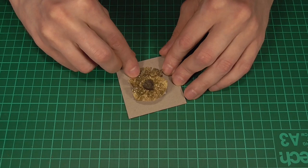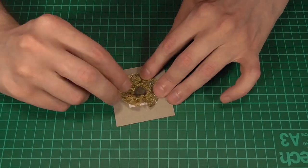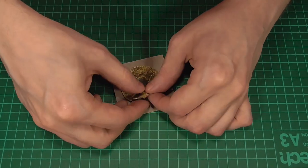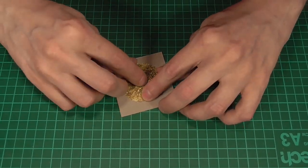And once we're happy with that, it's then just a matter of sticking the rest of the texture down all around the outside of the crater, doing our best to make sure that there's no glue or cardboard showing through.